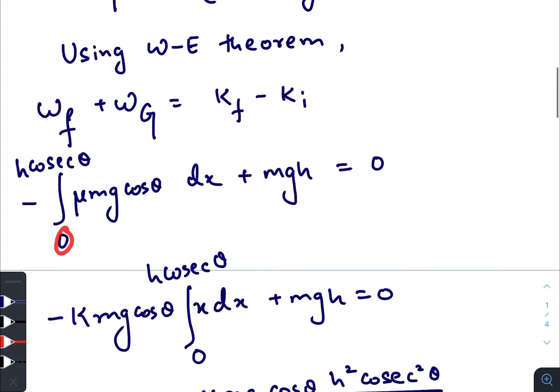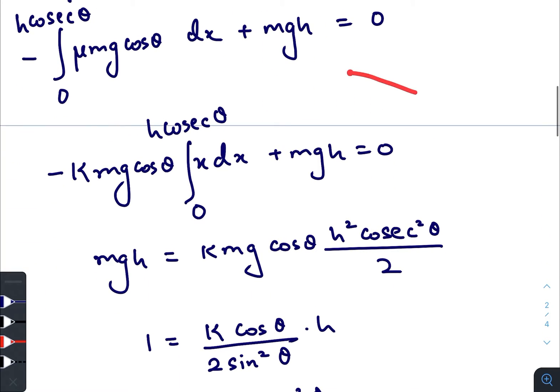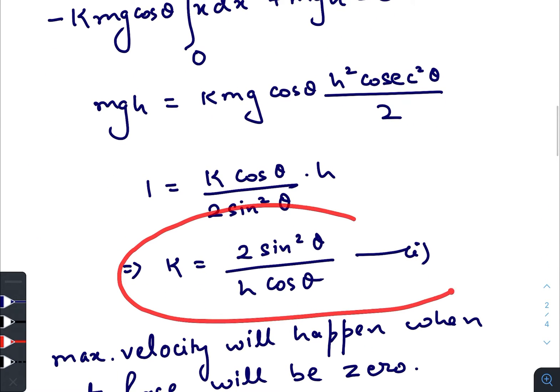And work done by gravity is mgh which equals to final kinetic energy is zero, initial kinetic energy is also zero. So after integrating we get an expression for k which looks something like this.